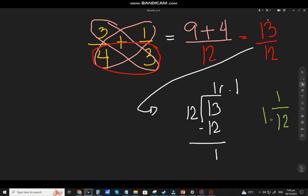So the final answer is 1 and 1 over 12. The quotient, that will be the whole number. The remainder that will be the numerator. And lastly, the divisor will be the denominator. That's it.